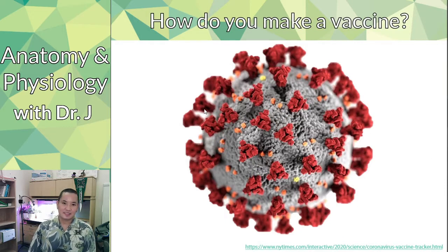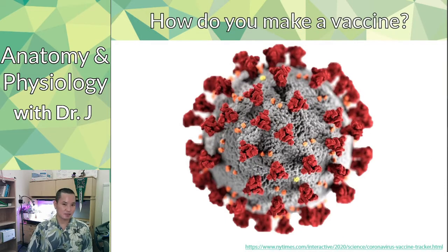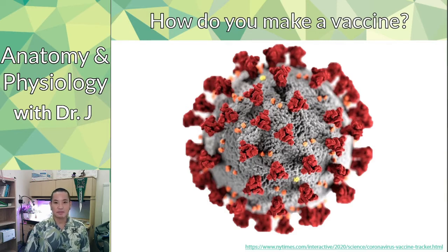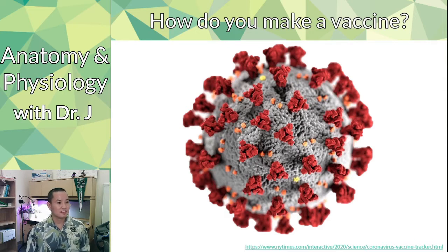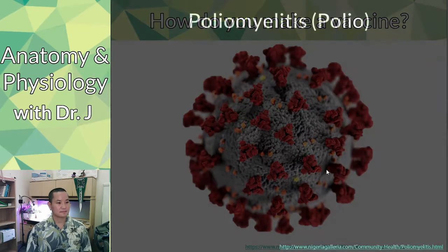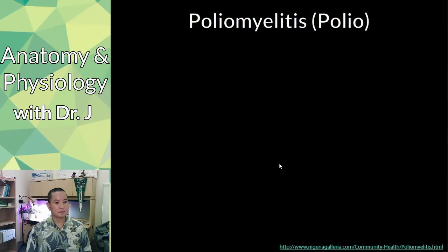So how do you make a vaccine? We know we have to get antigens into your body somehow. Here's our infamous image — you've probably seen this picture everywhere on the news. Everyone is familiar with this, right? So how do you make a vaccine against this?